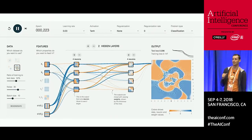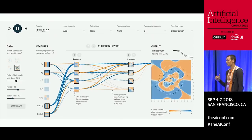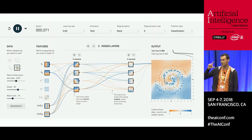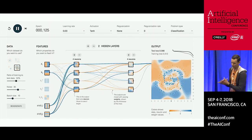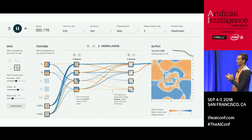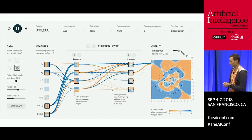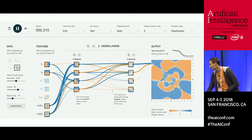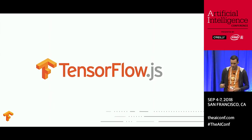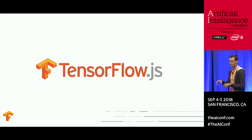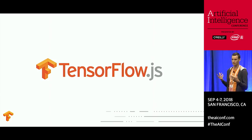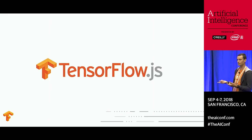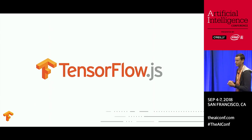Coming back to TensorFlow Playground, this is about 400 lines of JavaScript code, very specifically typed for this project. Our team took this prototype and started to build a linear algebra library for the browser. The project was initially open source and called deeplearn.js. We took deeplearn.js and aligned it with TensorFlow's eager execution and launched TensorFlow.js last April.